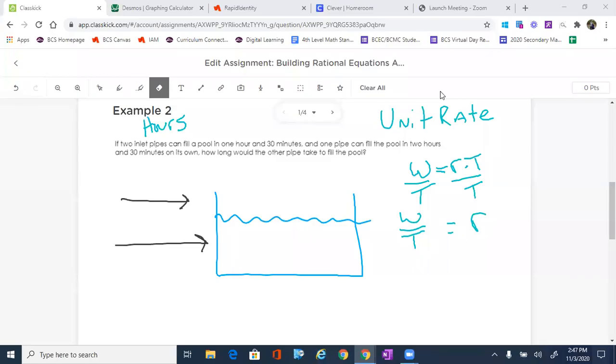All right, guys, we're going to be looking at another rational functions word problem, and this is going to be one in which there is a shared job, meaning two, three, or four things are working together to accomplish one goal.